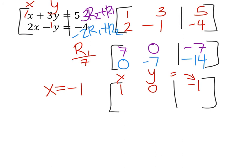In the next row, we can take row 2, and to make this negative 7 a 1, I would just divide it by itself, negative 7. So row 2 divided by negative 7: 0 divided by negative 7 is 0, negative 7 divided by negative 7 is 1, and negative 14 divided by 7 is 2.